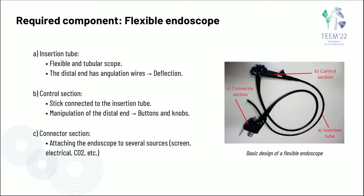This component has three main sections: an insertion tube, a flexible tubular scope with flexion features in the distal end; a control section, connected to the insertion tube with buttons and knobs to control the distal end; and a connector section, which allows attaching the endoscope to different sources such as screen or electrical sources.